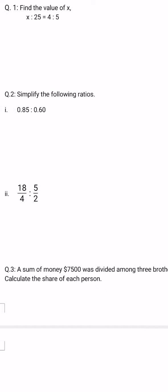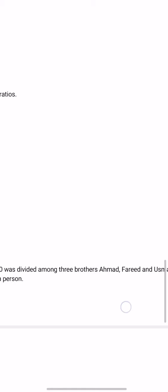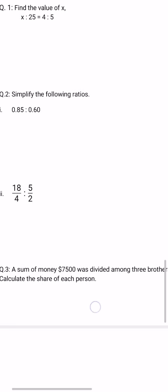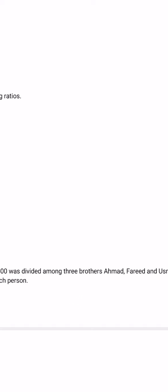In order to calculate the amount earned by Ahmad, you will write his ratio as a numerator term, which is 1 over the sum of ratios which is 6, and multiply it by the total amount which is $7500. In the same way, to get the share of the second person Farid, his ratio is 2, so 2 divided by the sum of ratio which is 6, multiplied by the total amount $7500. In the same way to calculate Usman's share, we will do 3 by the sum of ratio which is 6, and multiply this fraction by $7500. This way we will be able to calculate the share of each person.